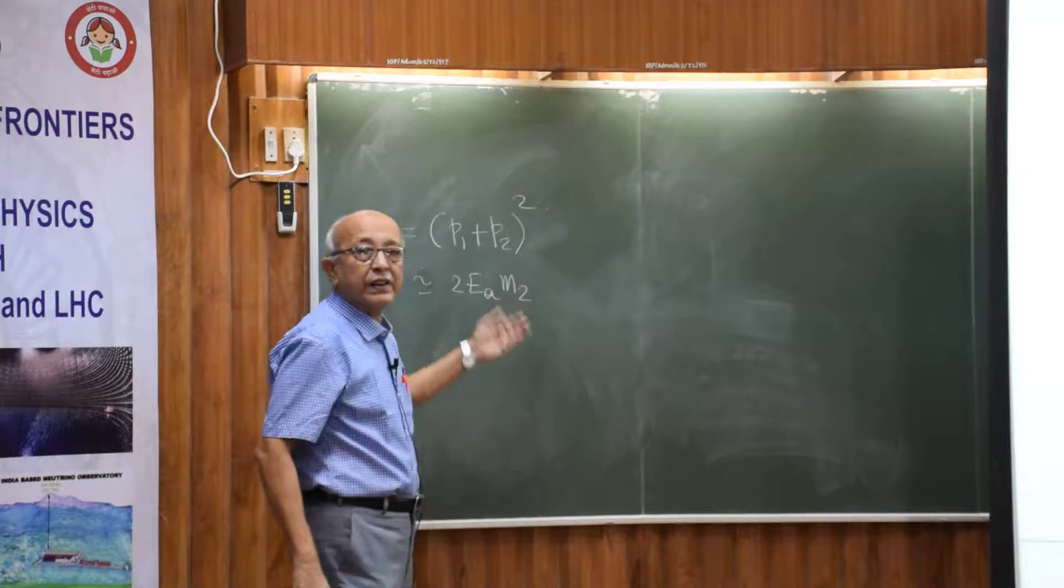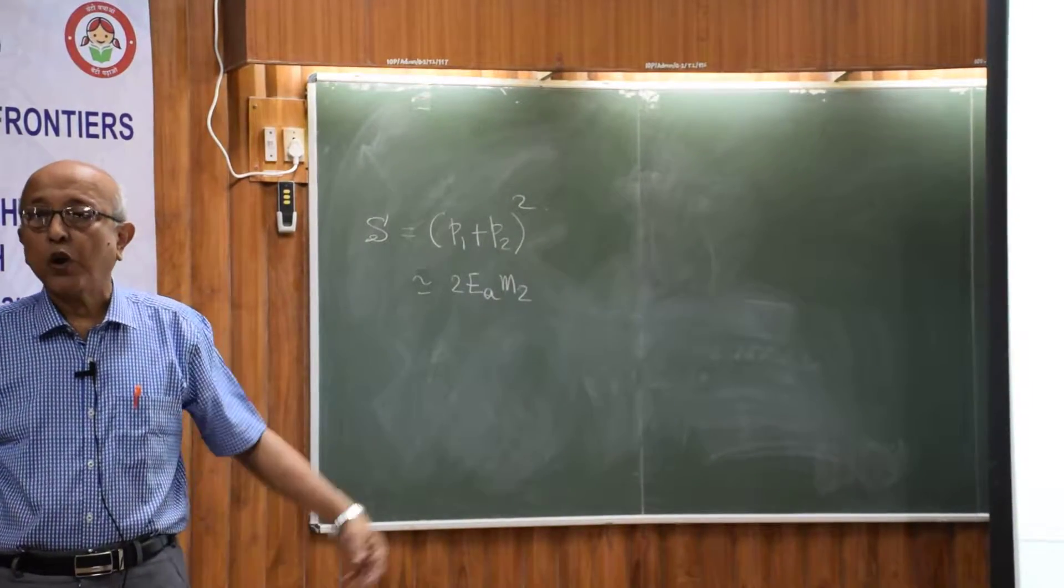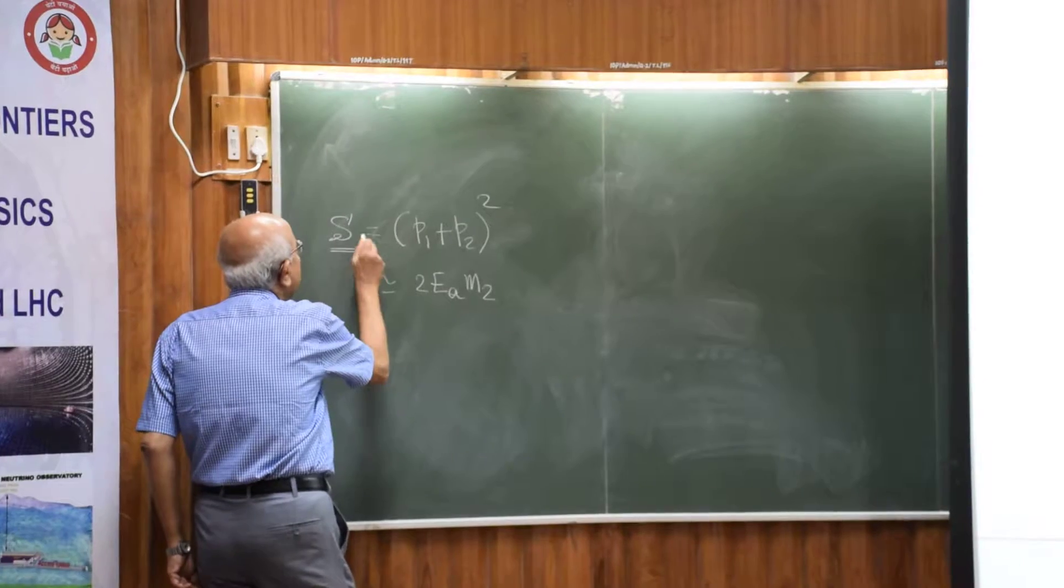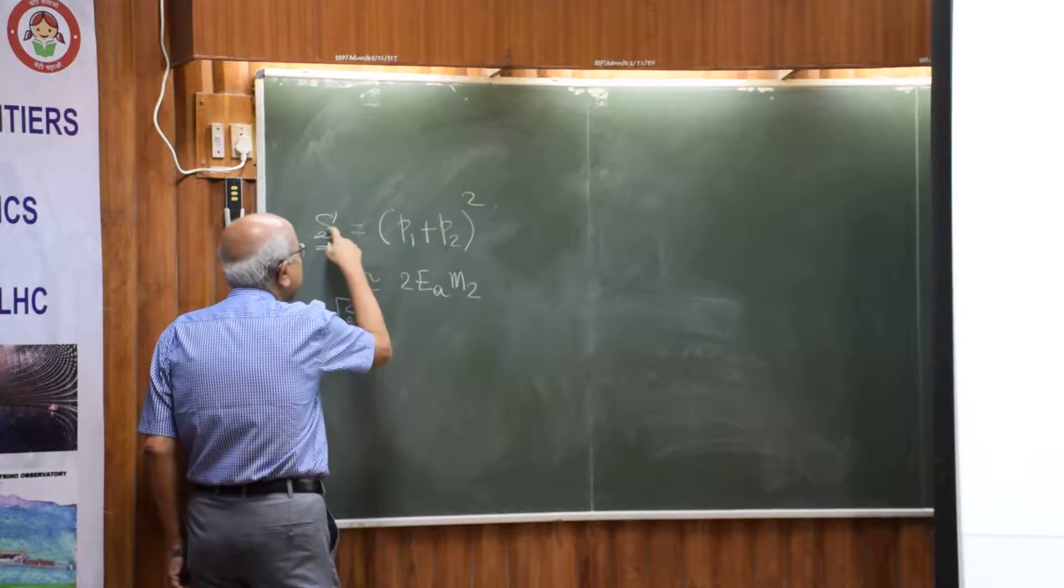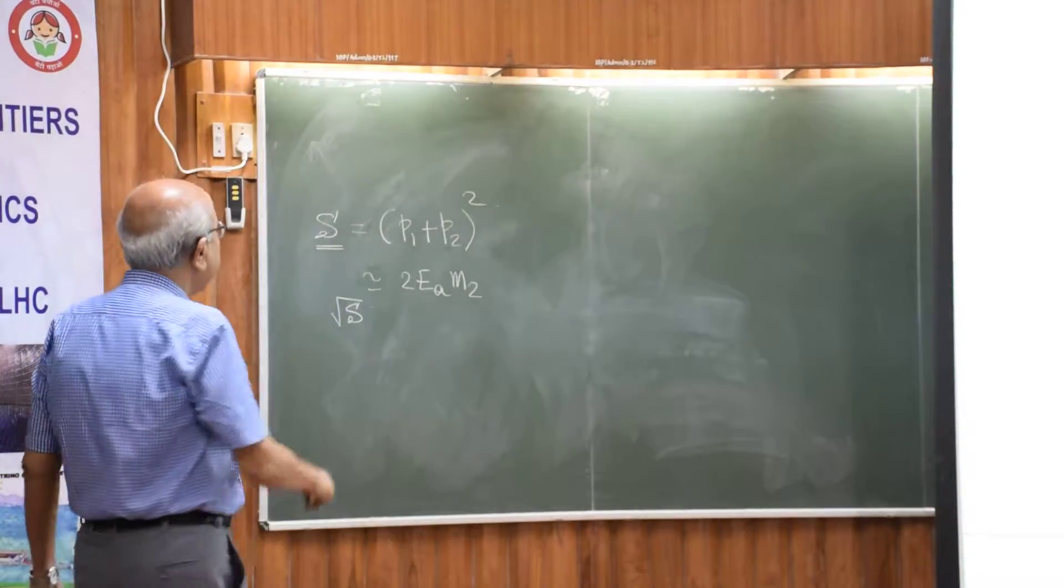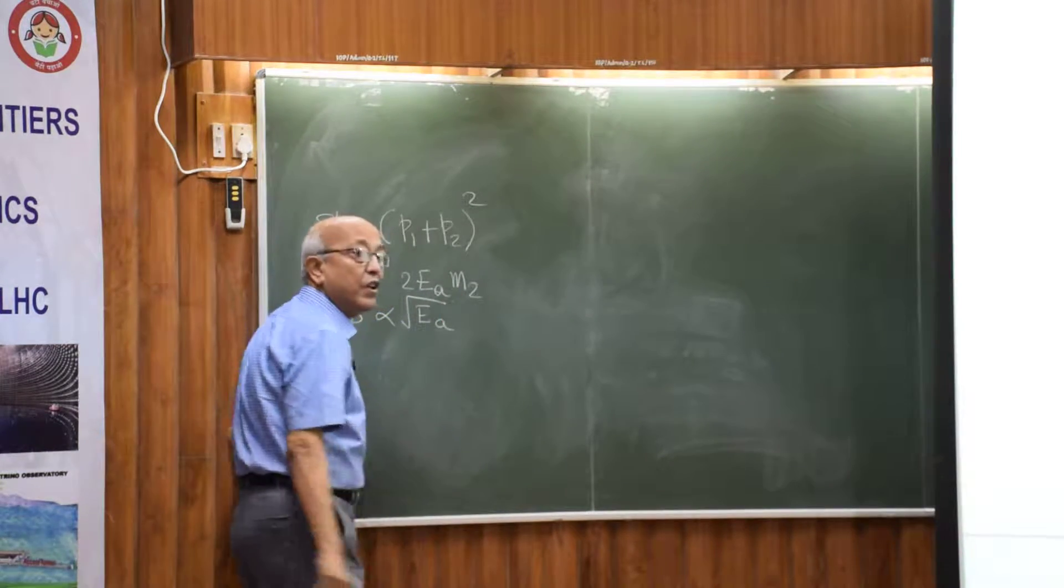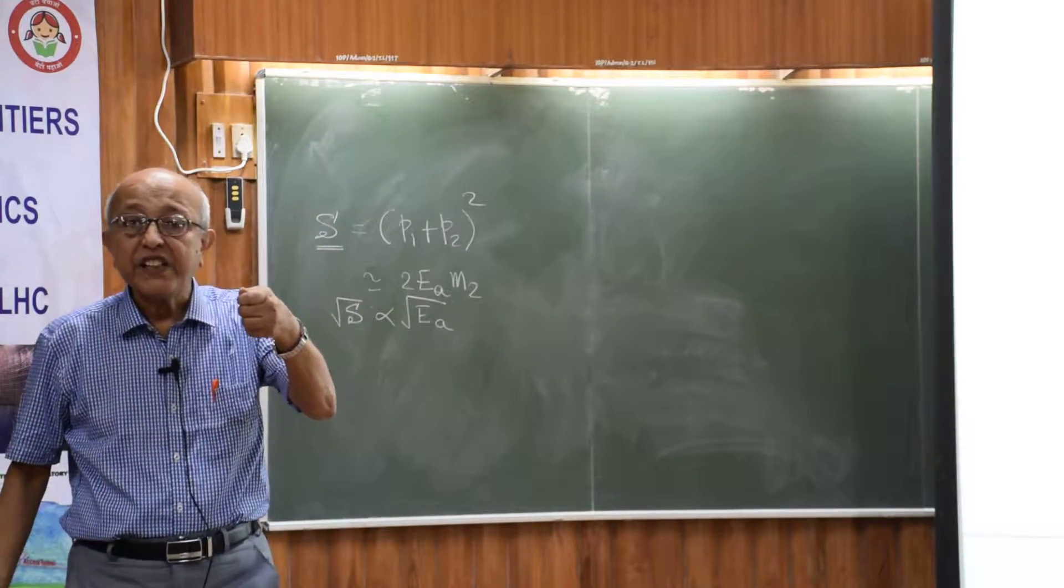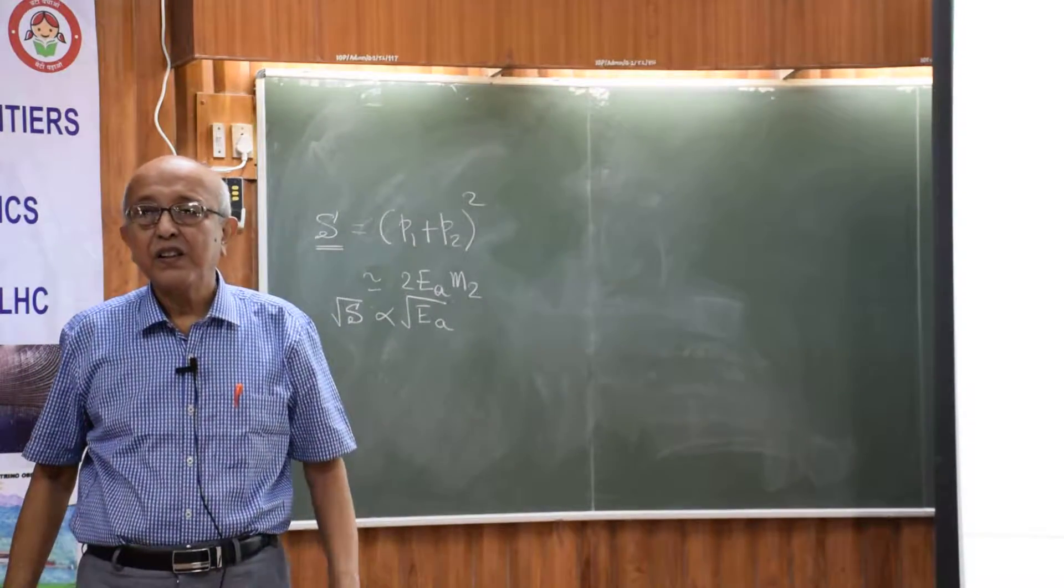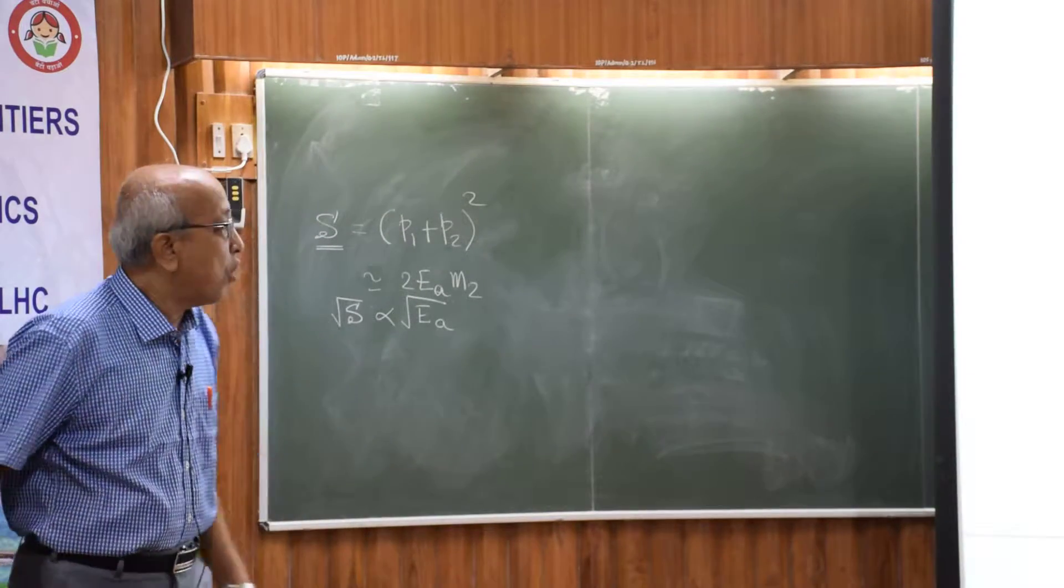Now this being Lorentz invariant, this is also the value of S in the center of mass frame, although you have used the lab frame variables. And therefore, root of this energy is available. This is available energy. So root of this is available for new particle production. And you see that that is only proportional to... so you hit with a 100 GeV projectile proton, you get 10 for new particle production. So it is not energy effective.